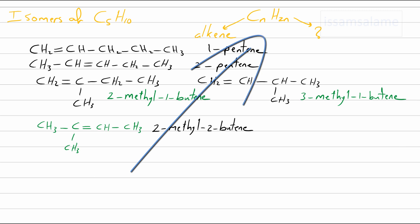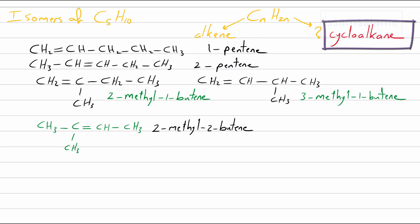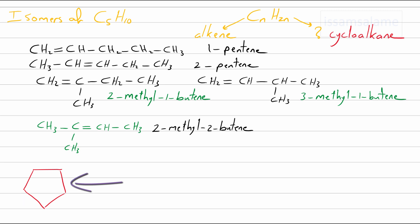Going back to the general formula CnH2n, I told you it can be for an alkene or it can be for a cycloalkane. Cycloalkanes are carbon atoms joined with single covalent bonds but forming a ring or a cycle. Here we have five carbon atoms forming a cycle, so it's called cyclopentane.